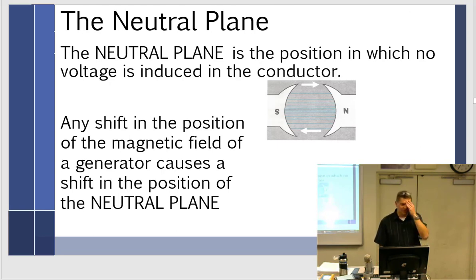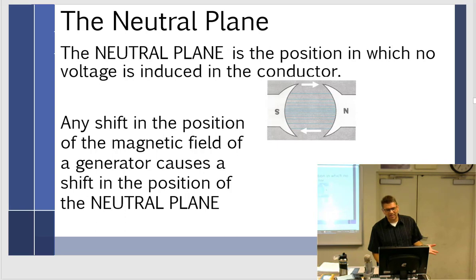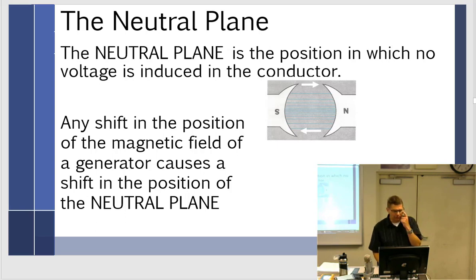Neutral plane is a position in which no voltage is induced in the conductor. We just defined something we already knew. When the armature was up here with a single wire in each position, it was in the neutral plane — running parallel to the lines of flux. Any shift in the position of the magnetic field of a generator causes a shift in the position of the neutral plane.